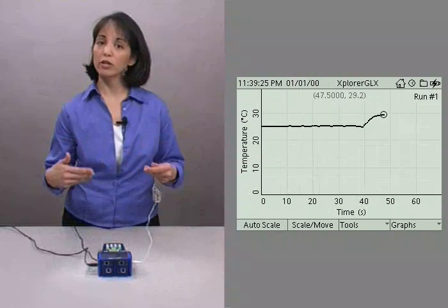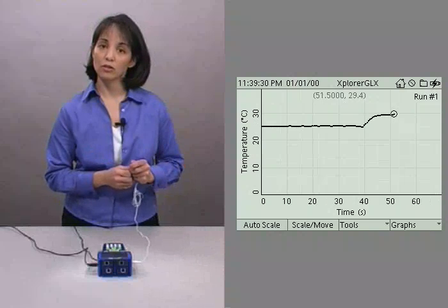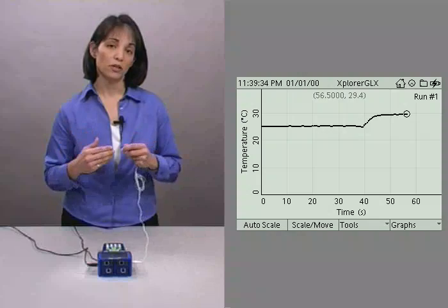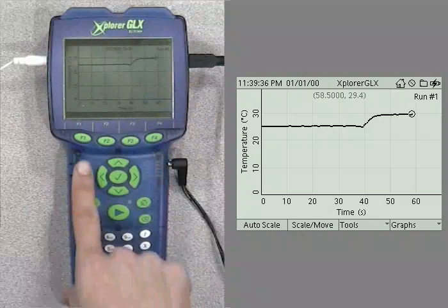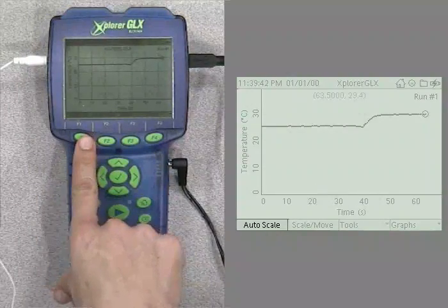Notice that as more and more data points are collected, the graph display automatically rescales its axis. You can actually rescale it yourself, and the easiest way to do that is by pushing the F1 key, which is now associated with the autoscale function. Go ahead and push it.